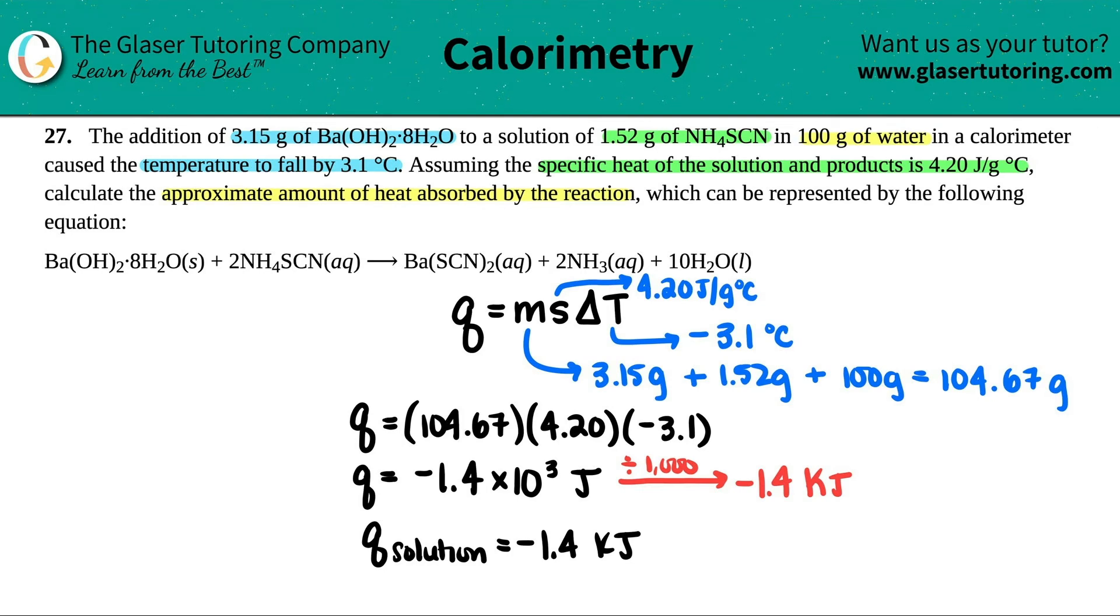But the question asks about the reaction, not the solution. Remember, heat is not created nor destroyed, just transferred. Whatever heat is involved with the solution is the negative of the Q of the reaction. Just flip the sign. The solution is losing 1.4 kilojoules of heat (negative), so the Q reaction would be positive 1.4 kilojoules. This means the reaction is absorbing the heat. The solution is giving heat to the reaction. That's the answer to the question.